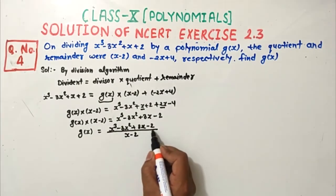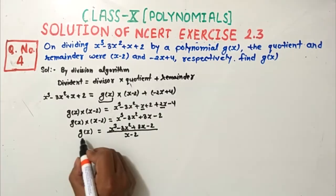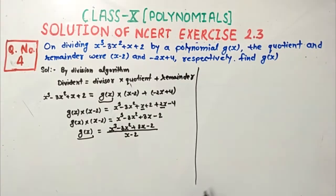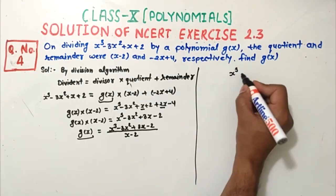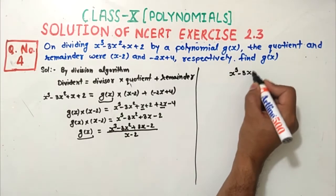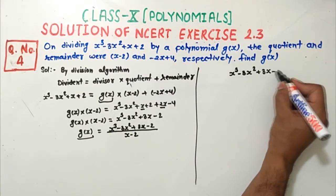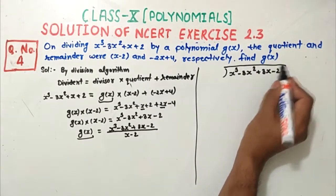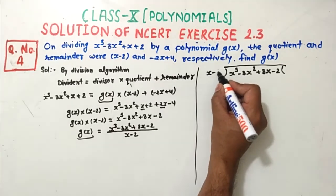Now we need to divide the polynomial x³ minus 3x² plus 3x minus 2 by x minus 2, and the result will be g(x). So here the dividend is x³ minus 3x² plus 3x minus 2, divided by divisor x minus 2.